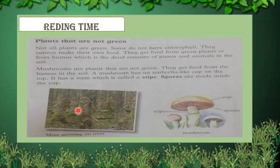These are horse-tail plants. They are also non-green plants. Non-green plants means they do not have chlorophyll. Chlorophyll is a green chemical by which plants can make their own food. But non-green plants do not have chlorophyll, which means they cannot make their own food. They get their food from humus, which is the dead remains of plants and animals in the soil.